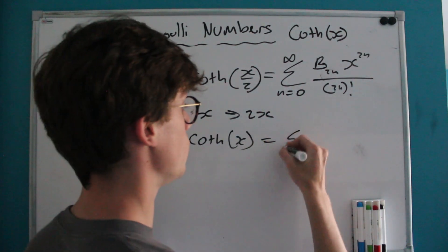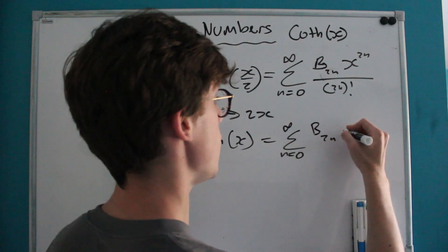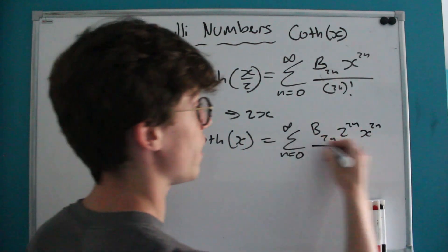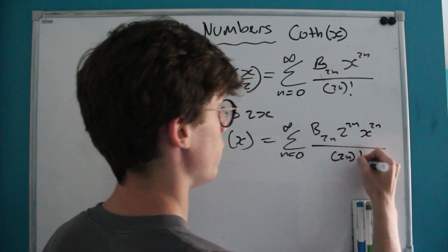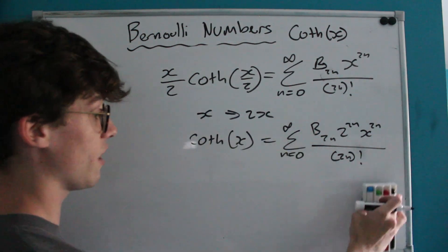That's going to leave us with the identity that X times coth X is equal to the sum from n equals 0 to infinity of b_2n times 2^(2n) and X^(2n), because of course we've transformed our X over here, divided by (2n)!. Our last step is just going to be to divide through by X to ensure that we've just got coth on its own, and we subtract one from our power of X over here.